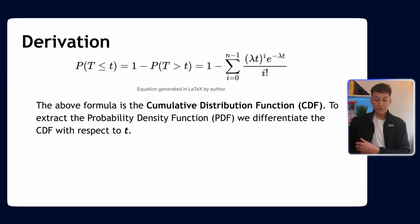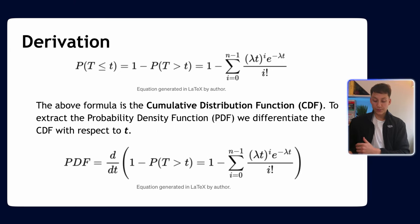So the above formula is something called the cumulative distribution function or the CDF, and to extract the probability density function, it's a known result in statistics that all you have to do is differentiate the CDF with respect to the random variable, in this case T is our random variable. And this is how we do it: PDF equals the derivative with respect to T of this formula above.